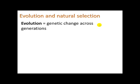Evolution means genetic change across generations. Individuals do not evolve, because their DNA does not evolve. But changes in DNA can occur in the sperm cells and the egg cells, and that can change offspring. So there can be evolution of a species from one generation to the next, as changes are made to the DNA.